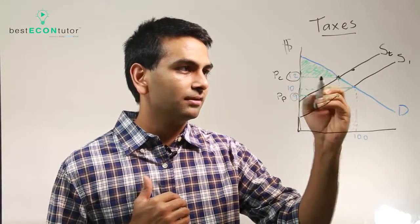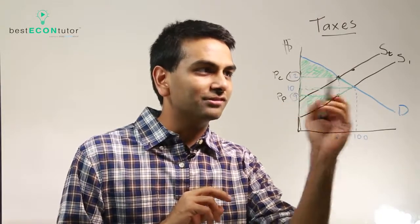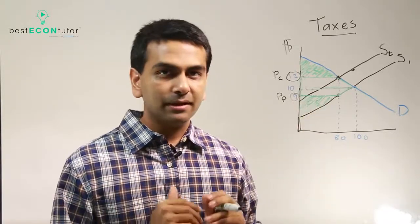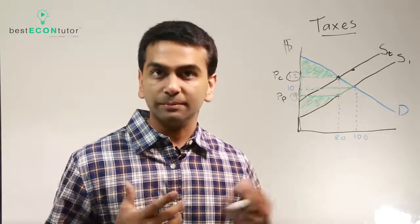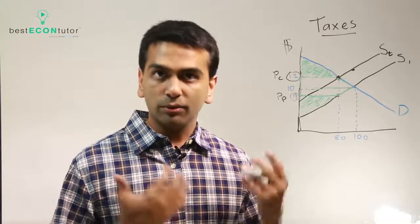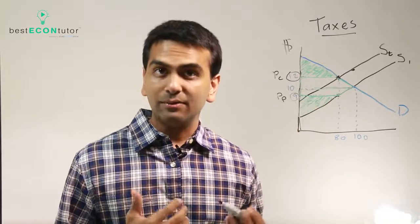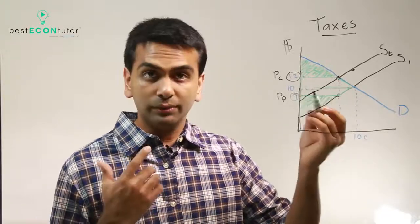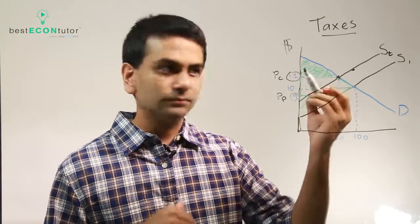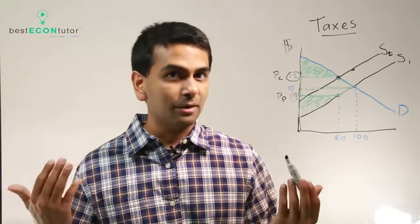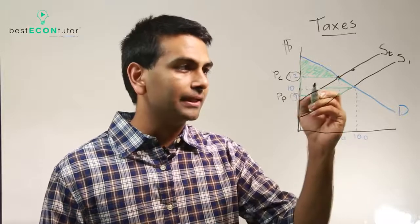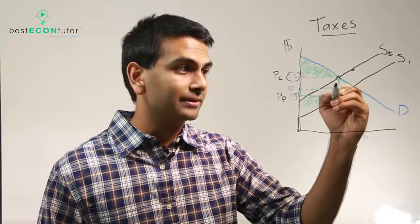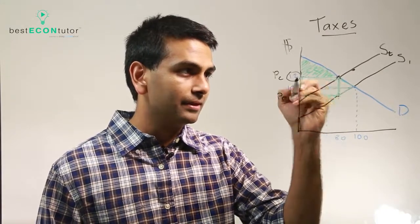So the CS and PS combined seem to suggest a large deadweight loss, but it's actually less than that because not all that money is going to nobody. We have to include government revenues as part of total surplus — total surplus includes CS, PS, and any government revenues, minus any expenditures (but here there are none). The government makes three dollars per item for 80 items transacted — three times eighty. This rectangle has a height of three (the gap between the two supply curves, the per-unit tax) times this quantity, so this length times width is the government revenue.